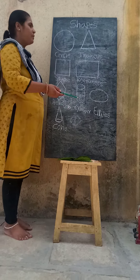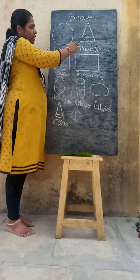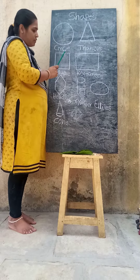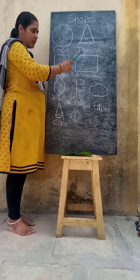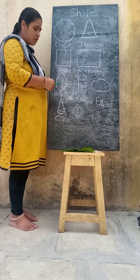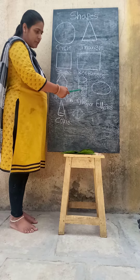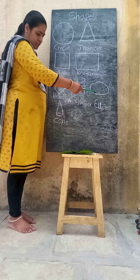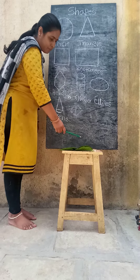Say after me — circle, circle, triangle, triangle, square, square, rectangle, rectangle, hexagon, hexagon, cylinder, cylinder, ellipse, ellipse, cone, cone.